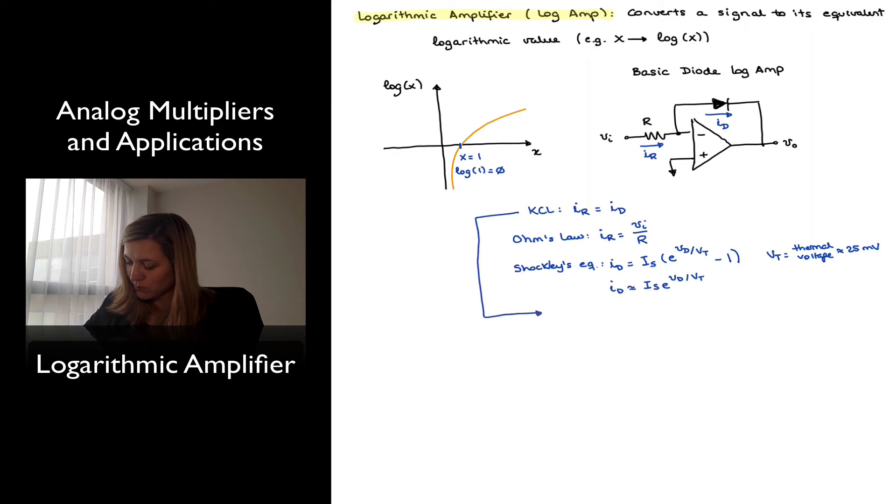And so I can approximate my ID as IS e to the VD divided by VT, my thermal voltage. And now if I apply again my KCL equation, I will have that VIN divided by R, which is IR, is approximately equal to IS e to the VD divided by VT. And notice that the output voltage, Vout, is going to be equal to negative VD, VD is the voltage across this diode. And again, because the negative input terminal of the op amp is connected to a virtual ground, then Vout is equal to negative VD. So VD is equal to negative Vout.